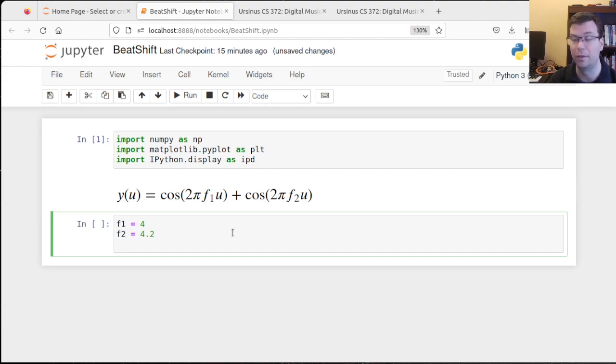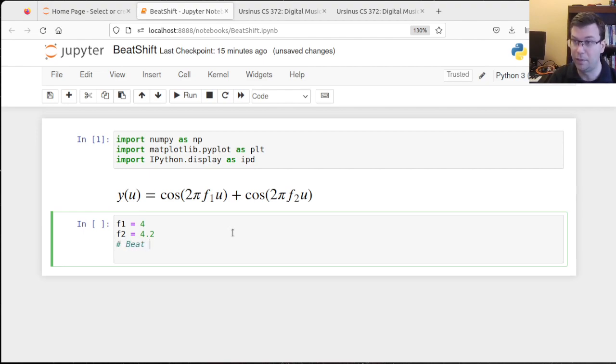And so my beat frequency between these two is 0.2 hertz, 0.2 cycles per second, which means that the beat should occur with a period of five, right? One over 0.2. So I'll say beat frequency is 0.2 hertz. So beat period is five seconds.